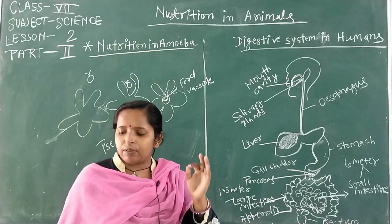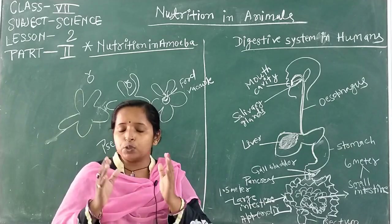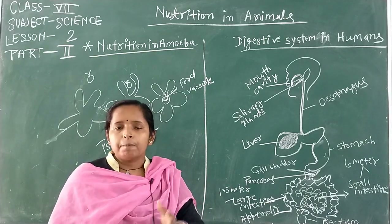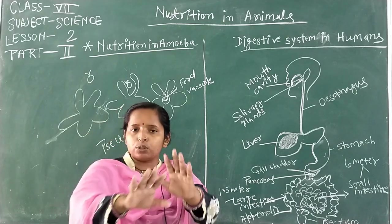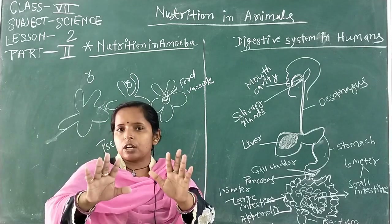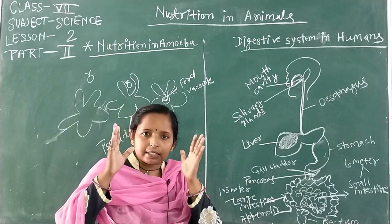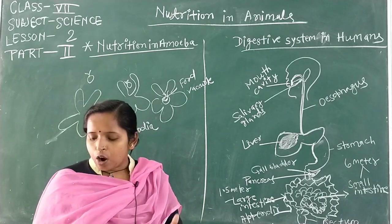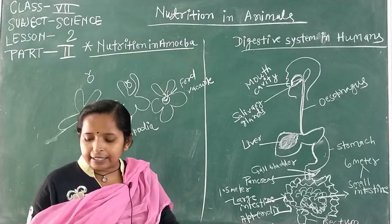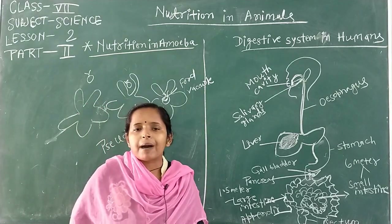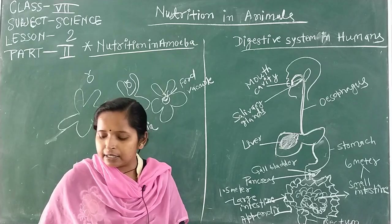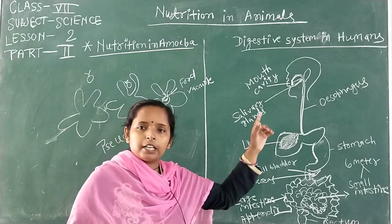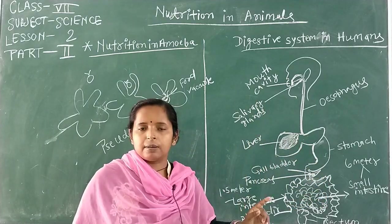Finally, villi are finger-like projections present on the inner surface of the small intestine. Their main function is to increase the surface area for absorption of digested food. The absorbed food is then carried by blood to different parts of the body for blending into cell components — this is assimilation. The undigested food is excreted as feces. This completes all the topics of the human digestive system.